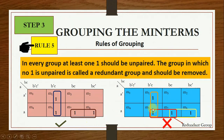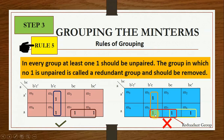For example, if a KMAP has three pairs, in the first pair one cell is exclusively for that group and the other is shared. In the yellow group, one 1 is exclusive and the other is paired with the red group. But in the red group, both 1s are paired with other groups — one with orange and one with yellow. So the red group is redundant because no 1 is exclusively present for it, and we must remove it.